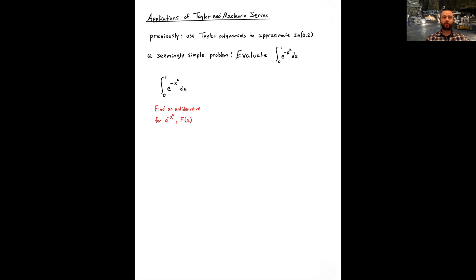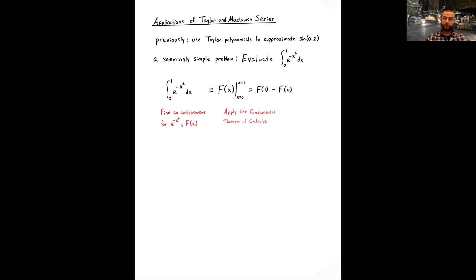When you have a definite integral, your main tool in calculus for evaluating it is the Fundamental Theorem of Calculus. You can only apply it if the function inside the integral — here e to the negative x squared — has an antiderivative. If one exists, call it capital F of x; then we just plug in the limits and subtract, getting F(1) minus F(0).